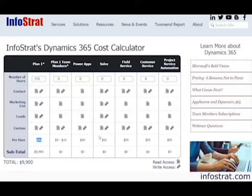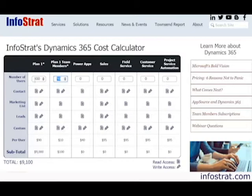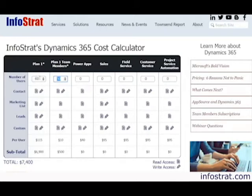If some of those users don't need full access to the system — they're playing a role where they're entering data in just a few areas of Dynamics 365 — we could further reduce the cost by moving them from Plan 1 down to team members. This is an even more dramatic shift. If we shift 50 users to team members and keep 60 users on full access, the total price drops down to $7,400.